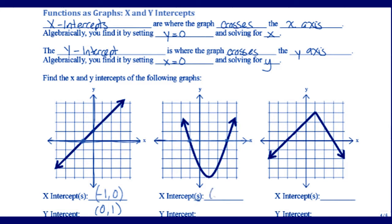One is at negative one comma zero, and the other looks like it is at three comma zero on my y-axis.